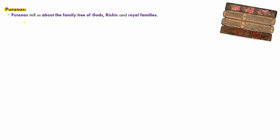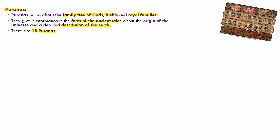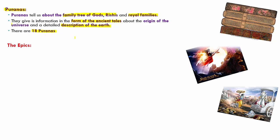Moving on to the next source of literature, we have the Puranas. The Puranas tell us about the family tree of gods and rishis as well as royal families, and give information in the form of ancient tales about the origin of the universe and detailed descriptions of the earth. There are about eighteen Puranas that exist today.